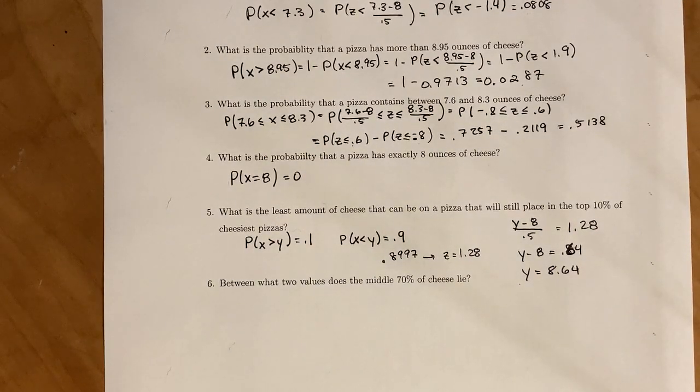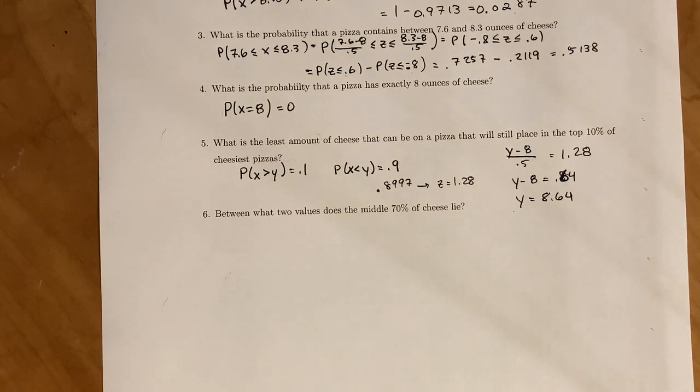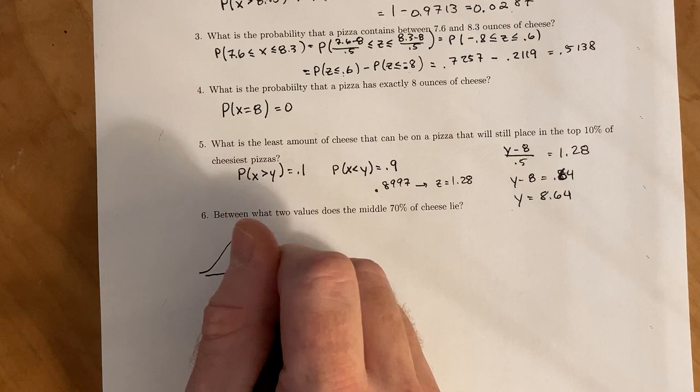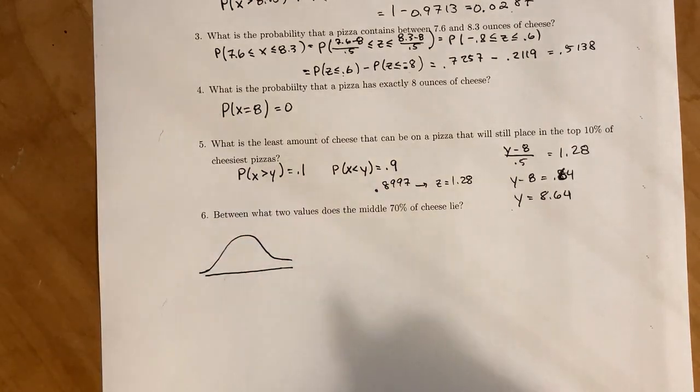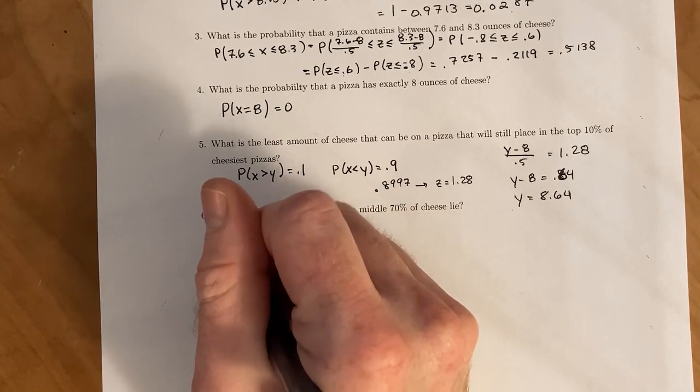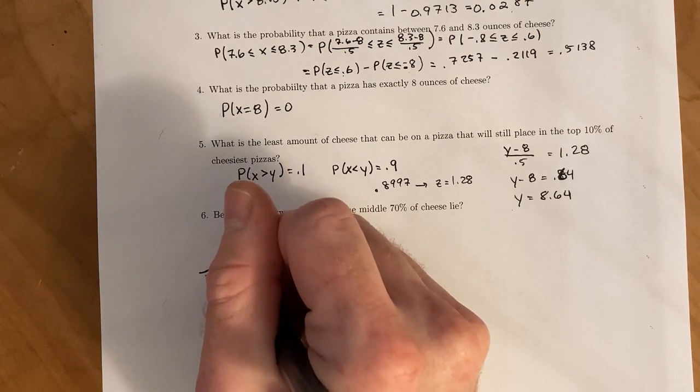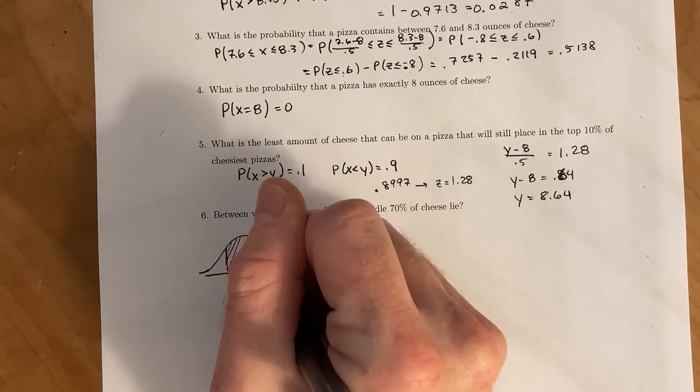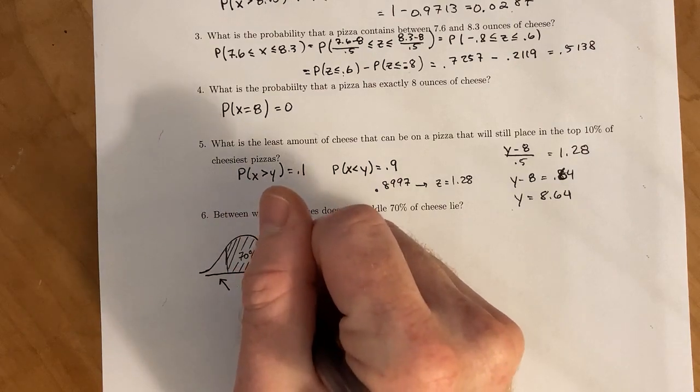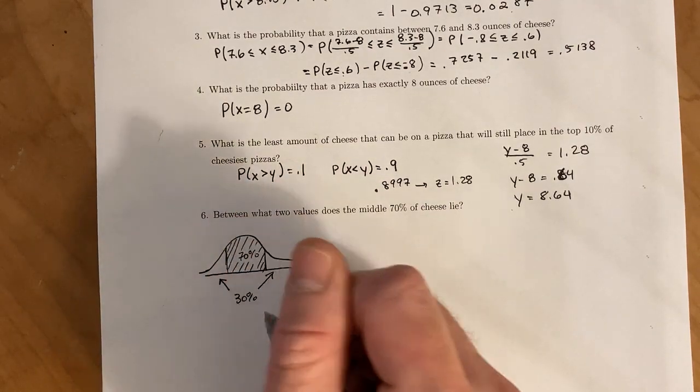Finally, we want to find two values for which the middle 70% of cheese pizzas lie. We're going to first draw a picture of this standard normal curve. And we know that we want the middle 70%. Right here in the shaded region is 70% of all the cheese pizzas, which means the remaining part, over here and over here, has to make up the remaining 30% of the area.